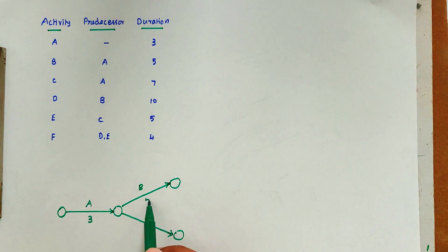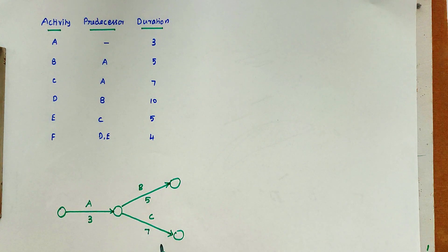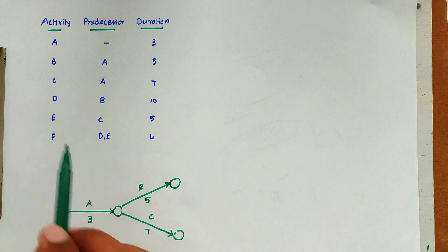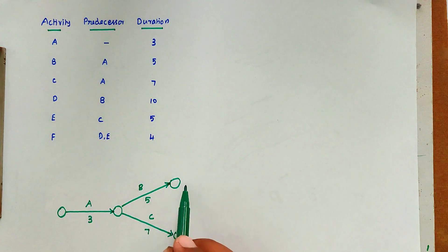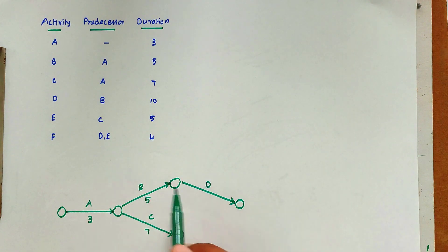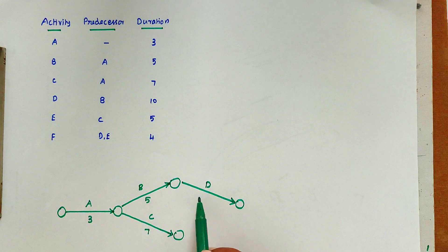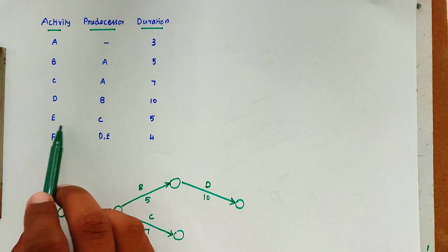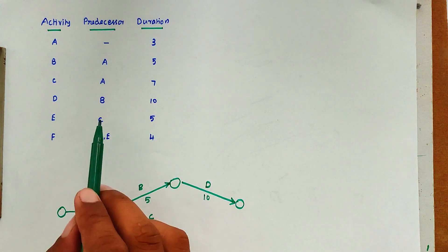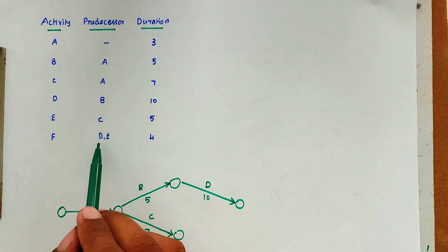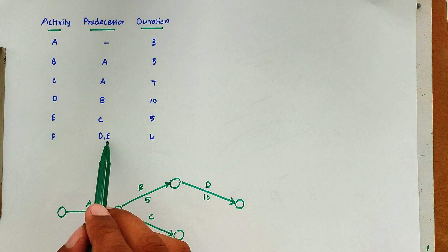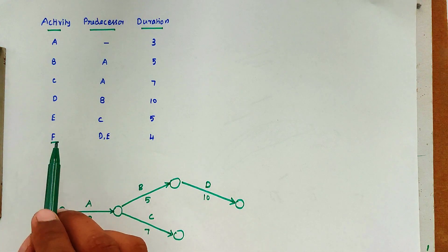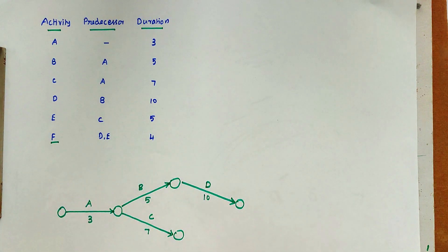Activity B has duration 5 and activity C has duration 7. Next we draw activity D, which has B as its predecessor, with duration 10. Then we draw activity E, which has C as its predecessor. Note that D and E are both preceding activities of F.